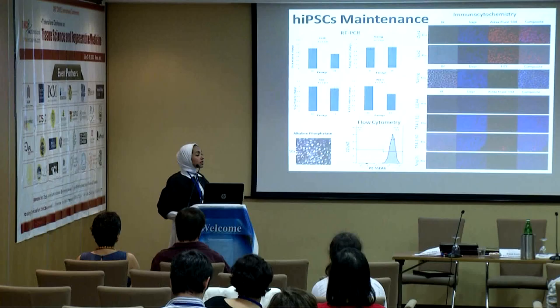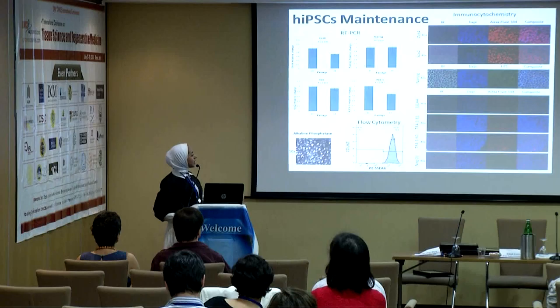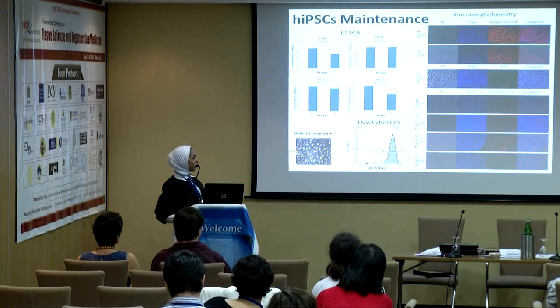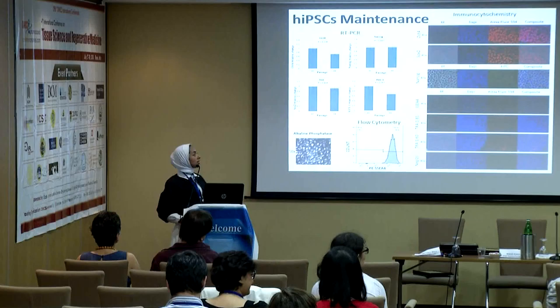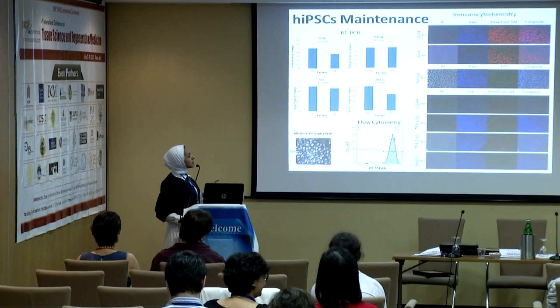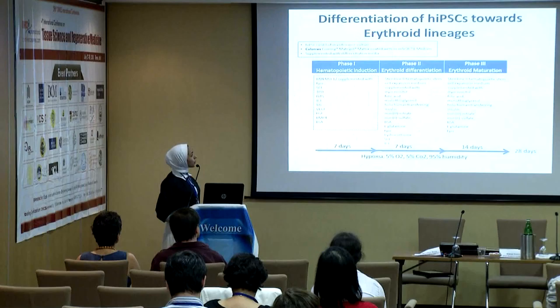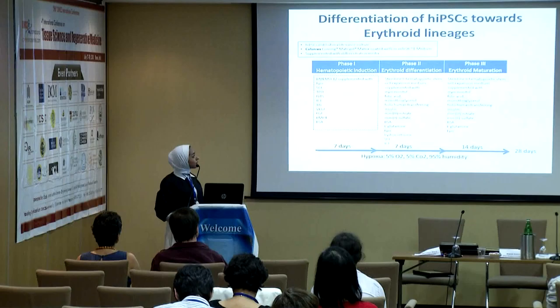The pluripotency status of those cells was confirmed by real-time PCR of four main pluripotency genes: OCT4, NANOG, SOX2, and REX. Then by flow cytometry of one surface marker, SSEA4, which showed 99% of the cells still expressing SSEA4. Additionally, alkaline phosphatase activity — a feature of pluripotent cells — and immunocytochemistry showing the presence of nuclear and surface markers were used to confirm pluripotency.